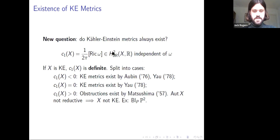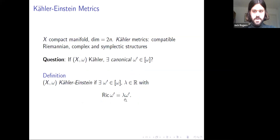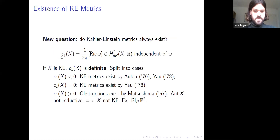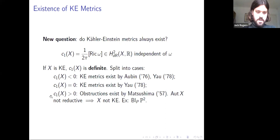So the question becomes: do Kähler-Einstein metrics always exist? The first step is to look at the first Chern class, defined by the cohomology class of the Ricci tensor, which is independent of ω within a given cohomology class. If you have a Kähler-Einstein metric, the Ricci tensor is proportional to the metric, so the first Chern class will be definite. This splits the question into three cases: first Chern class negative, zero, or positive.